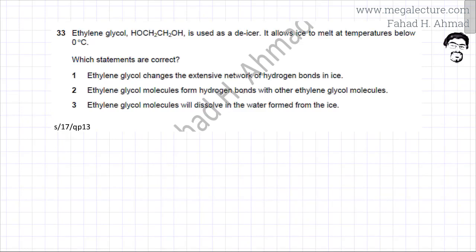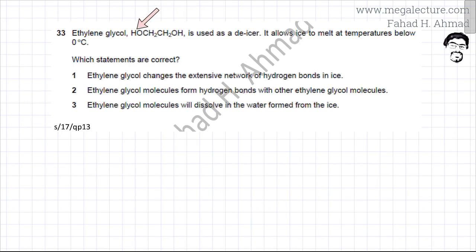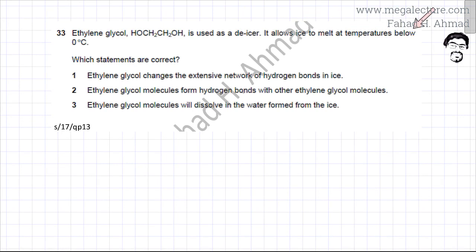The following question reads that ethylene glycol, which is this molecule over here, has a carbon chain and it has OH groups bonded on both sides of the molecule. This molecule is used as a de-icer — it allows ice to melt at temperatures below 0 degrees centigrade, so it helps in the melting of ice. The question is: which statements are correct?